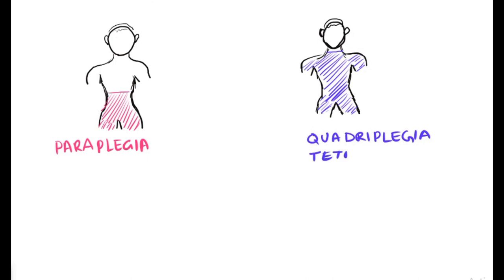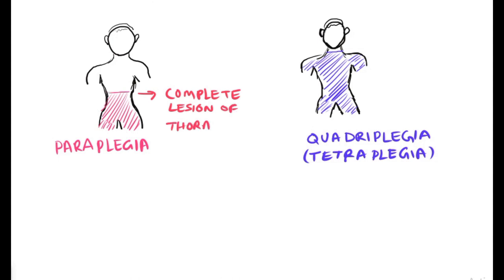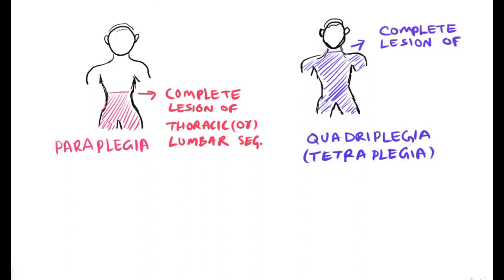The main difference between paraplegia and quadriplegia is that paraplegia involves only the lower limbs, whereas quadriplegia involves both the lower as well as upper limbs. Complete transection of the thoracic or lumbar segments leads to paraplegia, whereas complete transection of the cervical segments leads to quadriplegia or tetraplegia. This is the basic difference as seen in the illustration.